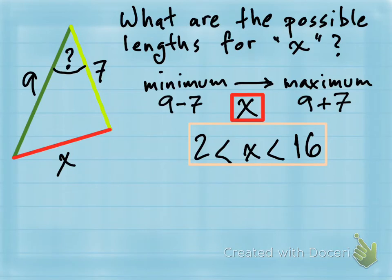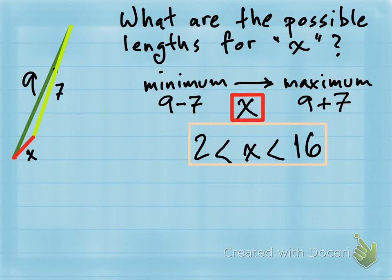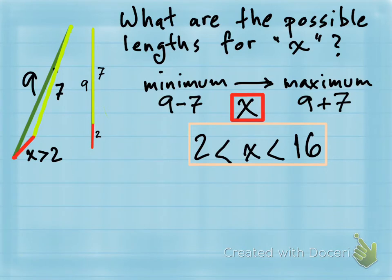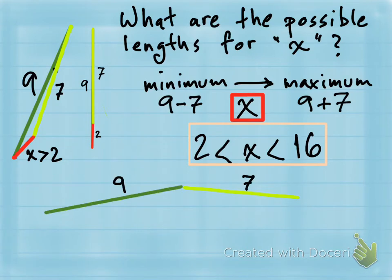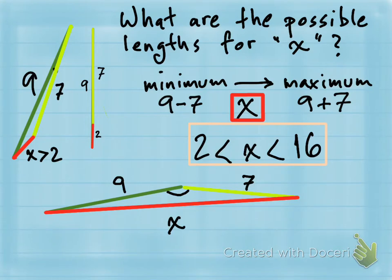We don't know the angle between sides nine and seven. If we made that angle really small, so sides seven and X were practically lying on top of side nine, then X would have to be greater than two — otherwise you wouldn't have a triangle at all; you'd just have line segments on top of each other. On the other hand, if we opened that angle up as wide as possible, that would stretch out X to be less than 16, because the sum of any two sides must be greater than the third side.